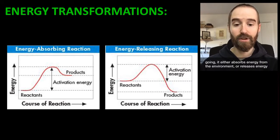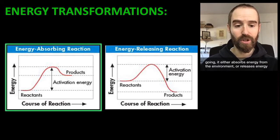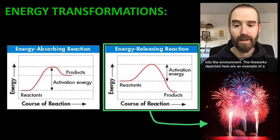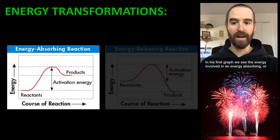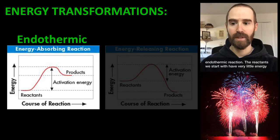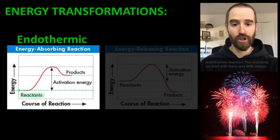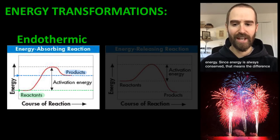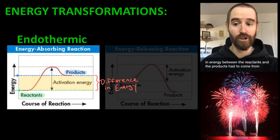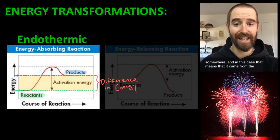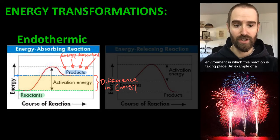Once a reaction gets going, it either absorbs energy from the environment or releases energy into the environment. The fireworks depicted here are an example of a chemical reaction that releases energy — quite vividly in this case. In this first graph, we see the energy involved in an energy-absorbing, or endothermic, reaction. The reactants we start with have very little energy of their own. The products on the other side of this hump have more energy. Since energy is always conserved, the difference in energy between the reactants and the products had to come from the environment in which this reaction is taking place.